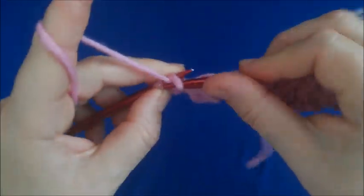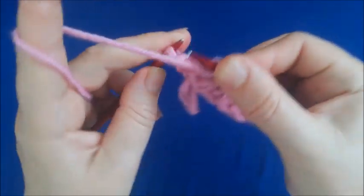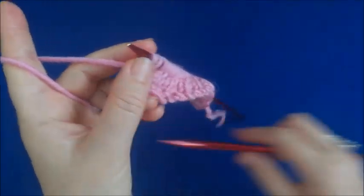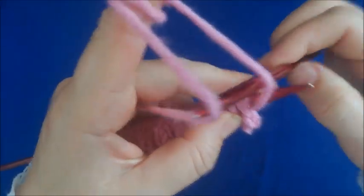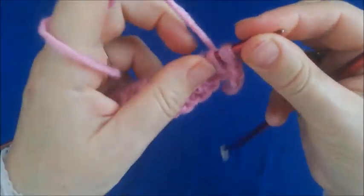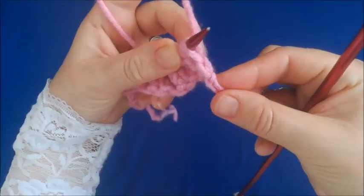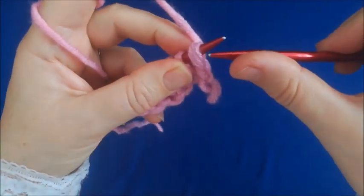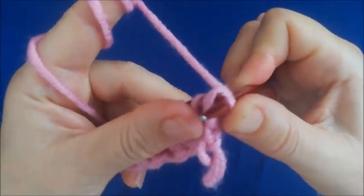Bir tanesini örmeden boş bırakıyorum. Şişimi çeviriyorum. Şu boş bıraktığım ilmeği normal yönü neyse, burada düz örgü, onunla devam ediyorum ve sıkı tutuyorum.